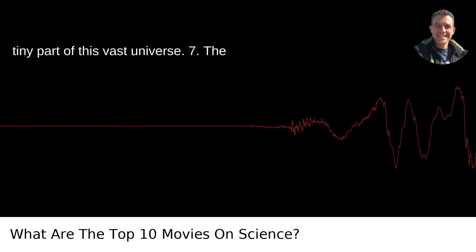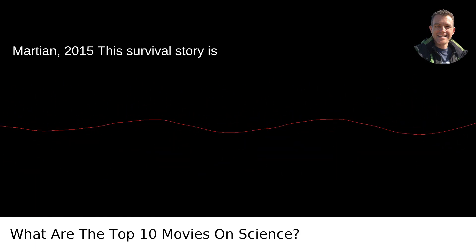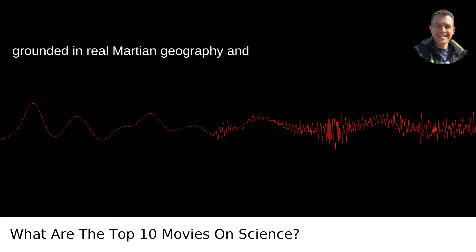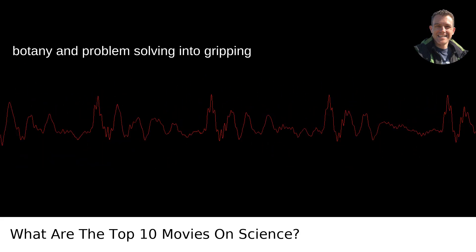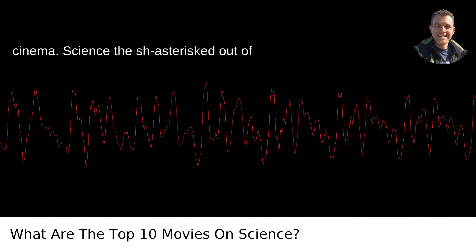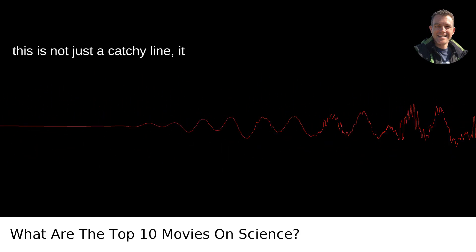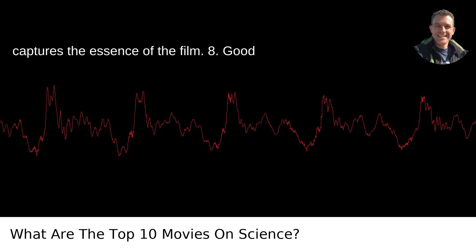7. The Martian, 2015. This survival story is grounded in real Martian geography and plausible space travel science. It turns botany and problem-solving into gripping cinema. Science the sh-asterisked out of this, is not just a catchy line. It captures the essence of the film.